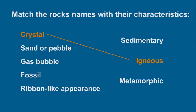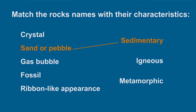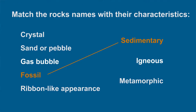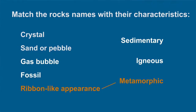Correct. Crystals go with igneous rocks — think about the solidification of water into ice crystals due to cooling and compare it to the cooling and solidification of magma. Sand or pebbles go with sedimentary rocks — think of individual sand grains or pebbles settling out and forming sediments. Gas bubbles go with igneous rocks — recall the surface of pumice stone that we use. Fossils go with sedimentary rocks — think of where we find our coal and petroleum reserves. Ribbon-like appearance goes with metamorphic rocks — when we apply excessive stress on an object, it takes a wavy appearance.